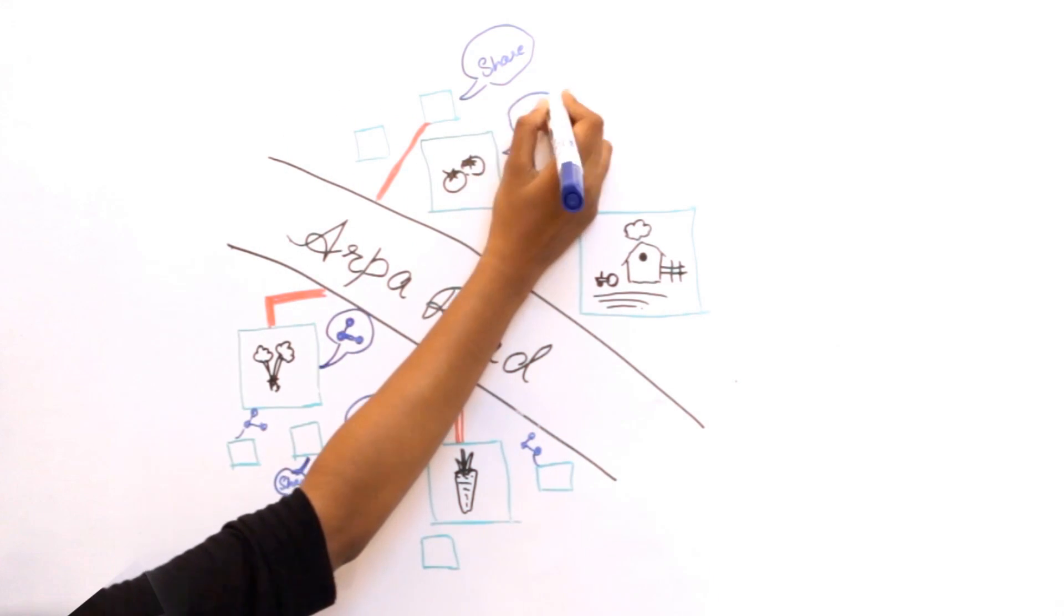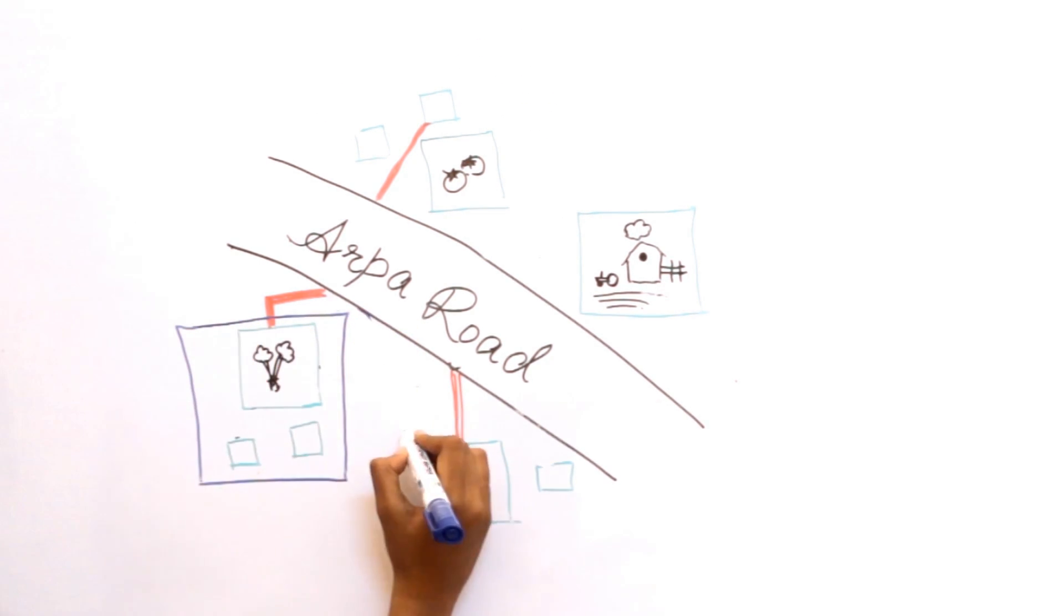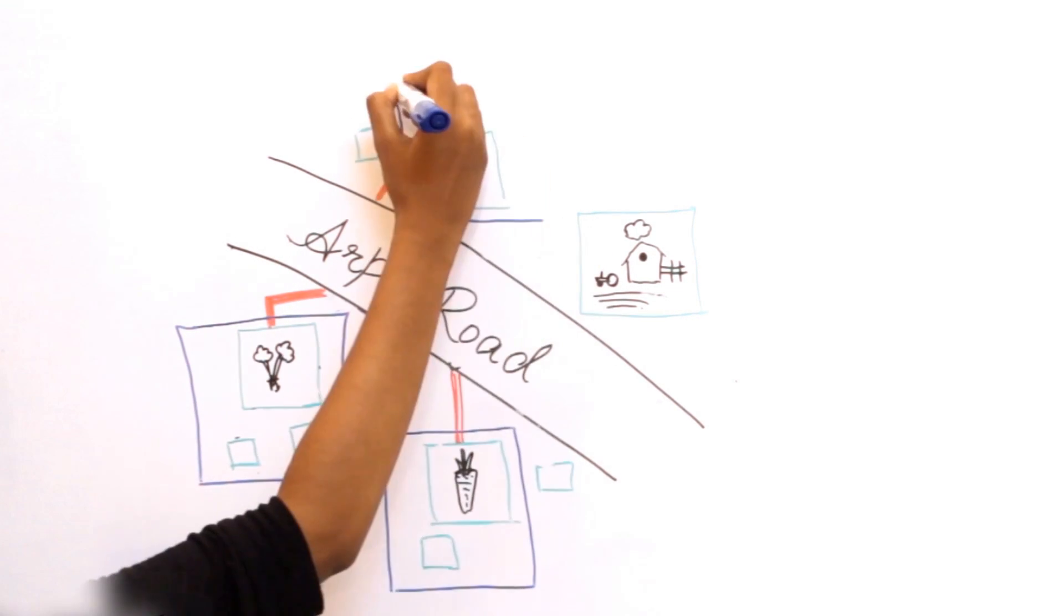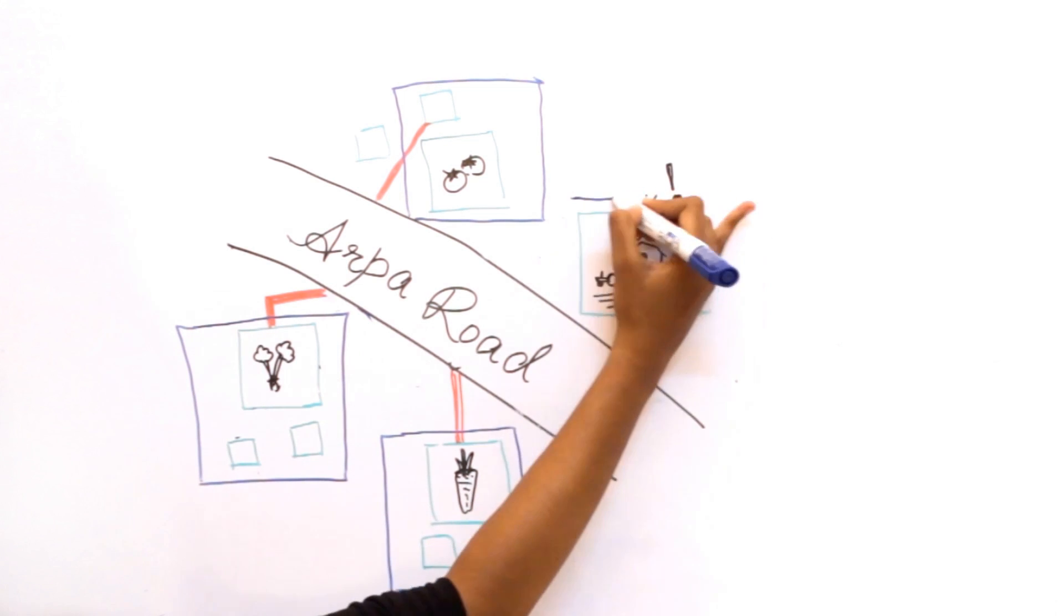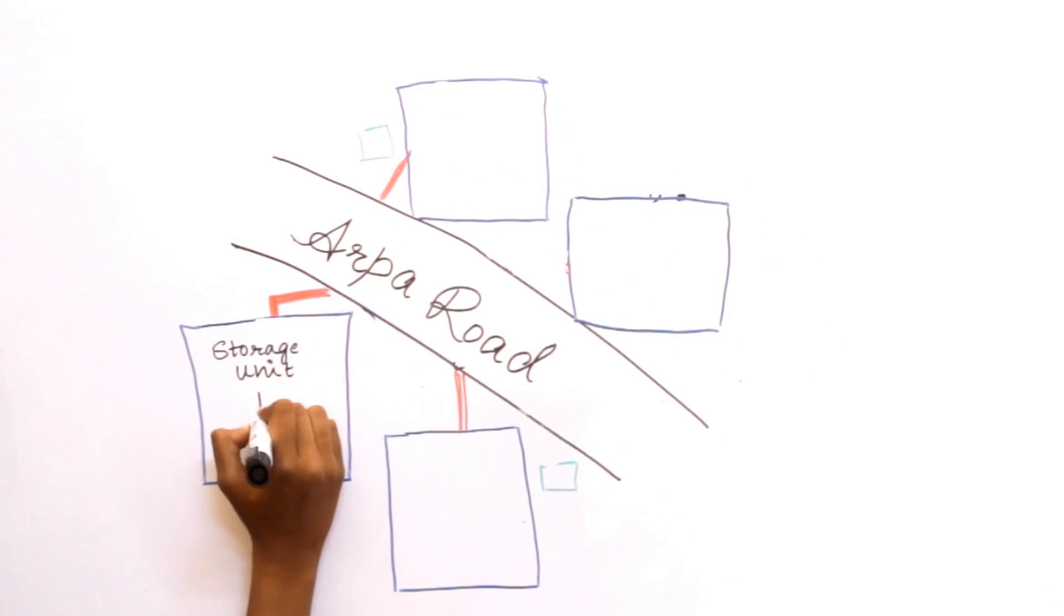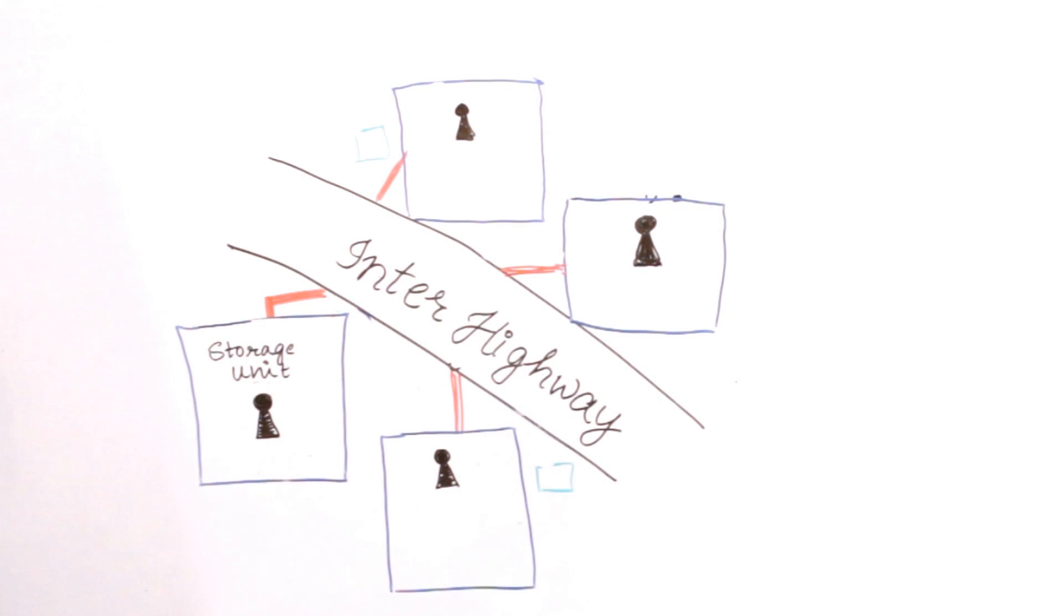Gradually, more and more people wanted to share their vegetables. So, farms were divided into different groups and each group was given a storage unit. Some farms produced so many vegetables that they had their own independent storage unit. The Arpa Road was modified into an inter-highway which connected all the storage units and facilitated exchange of vegetables on a larger scale.